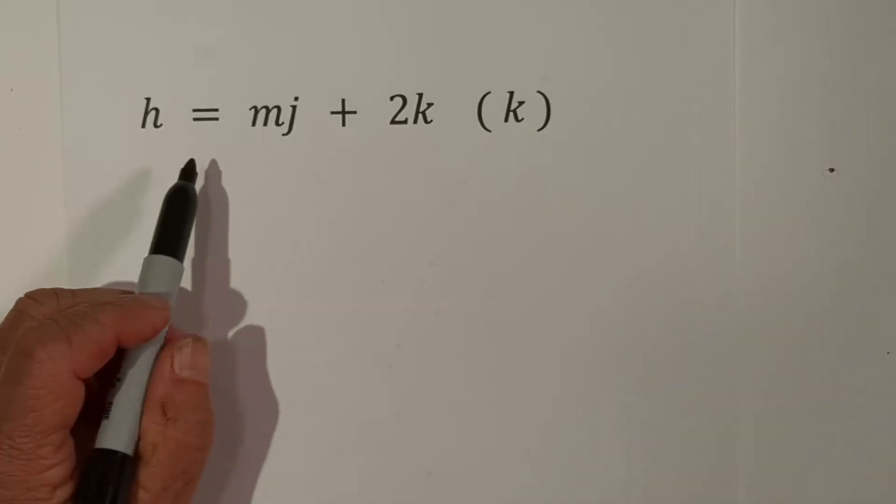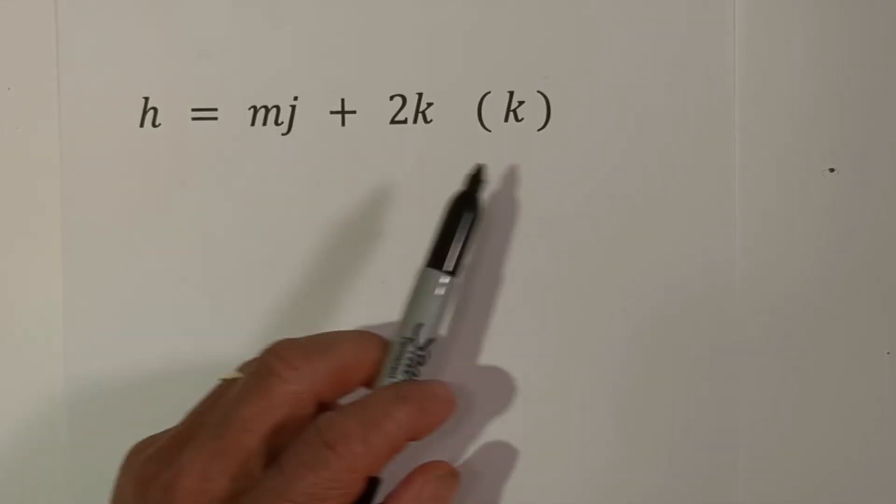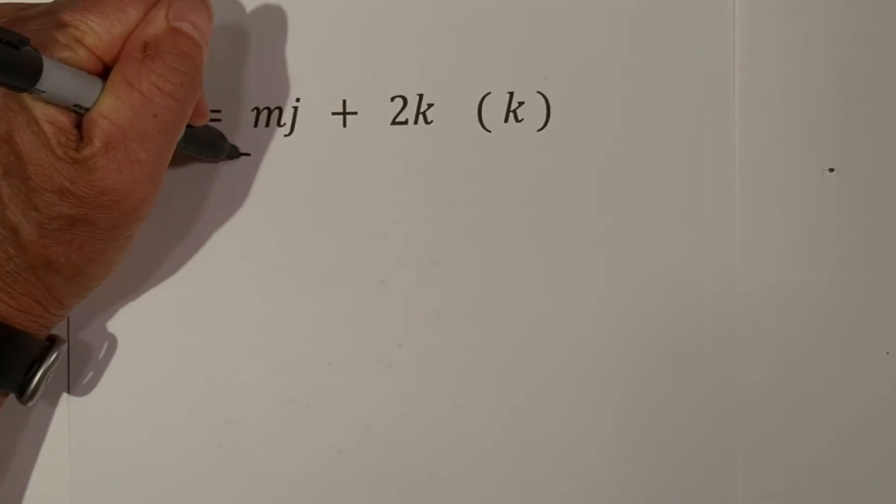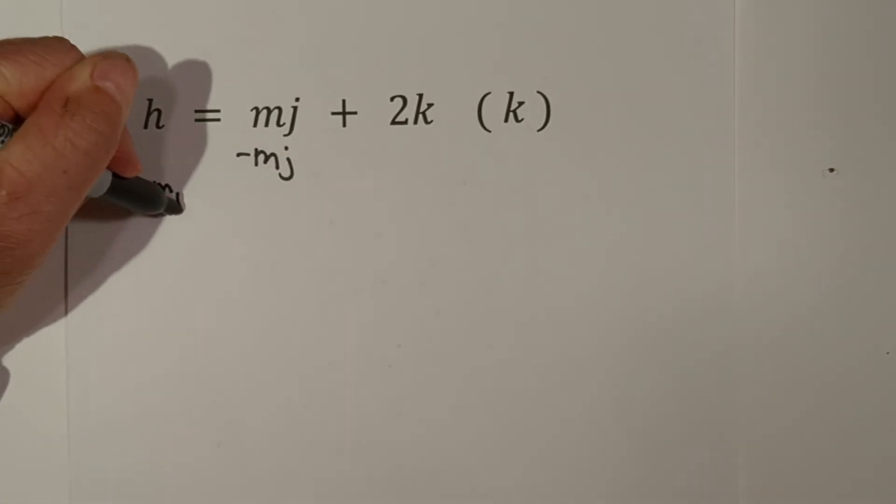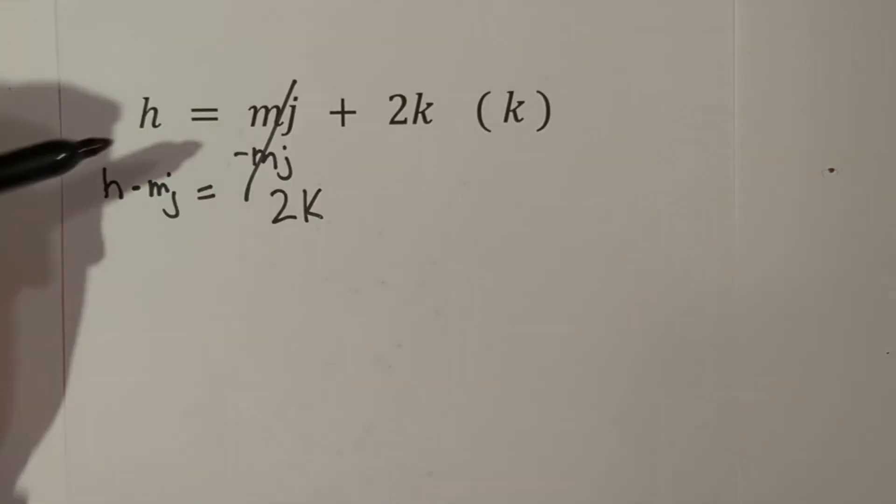On this one we have H equals M times J plus 2K and we're trying to solve for K. So we need to get K by itself. The first thing we can do is let's go ahead and subtract MJ from each side. So we have H minus MJ equals, these cancel, and then that's 2K.